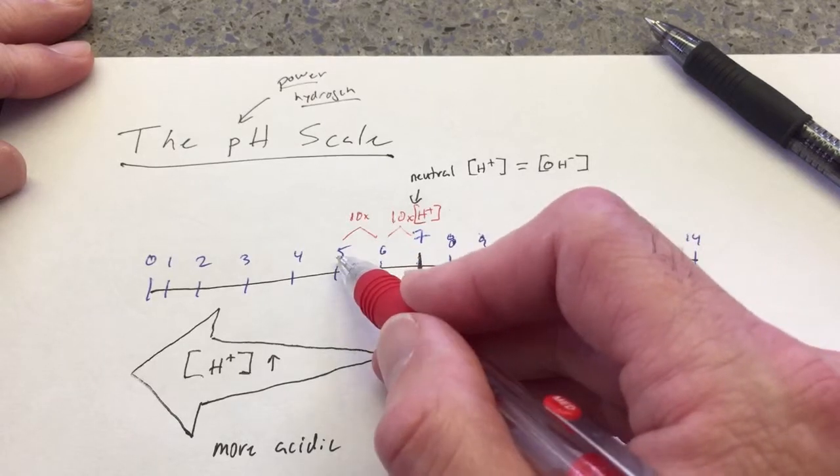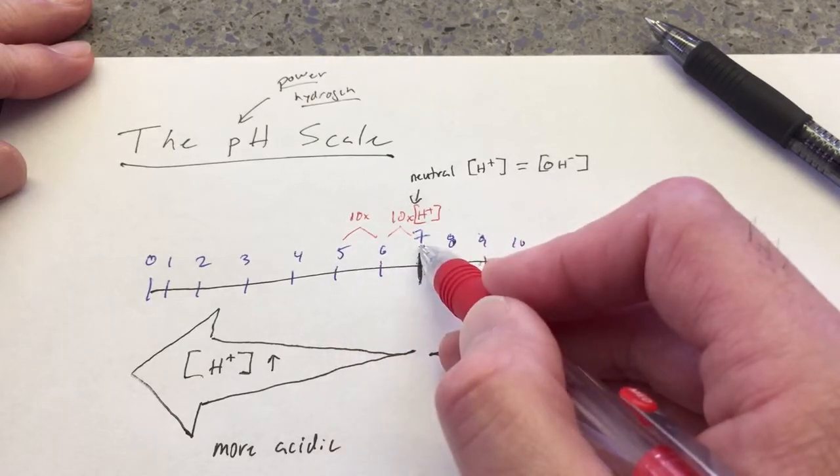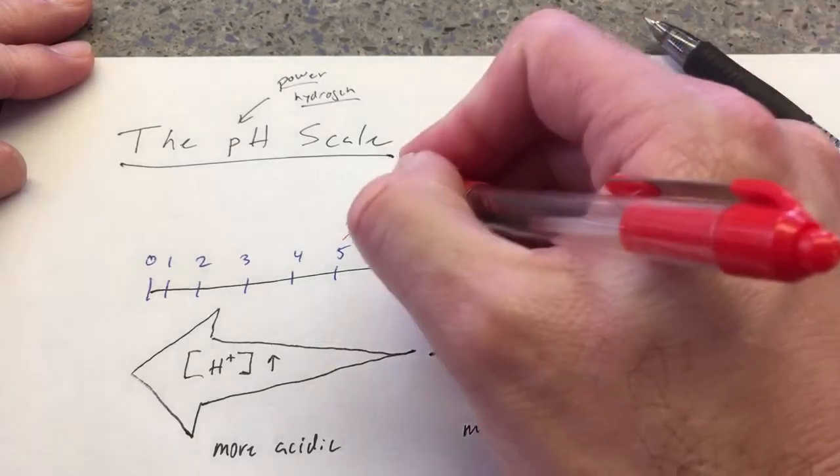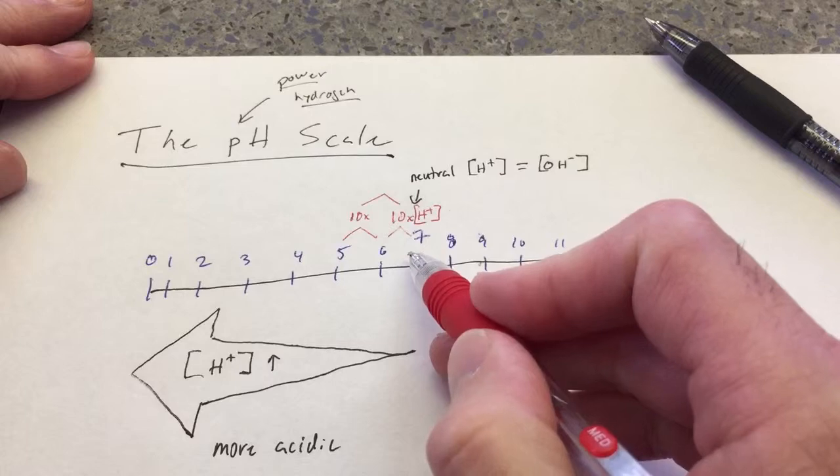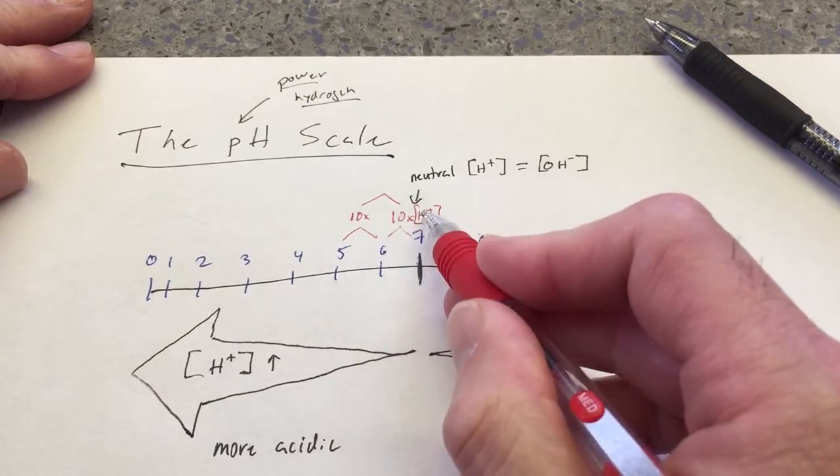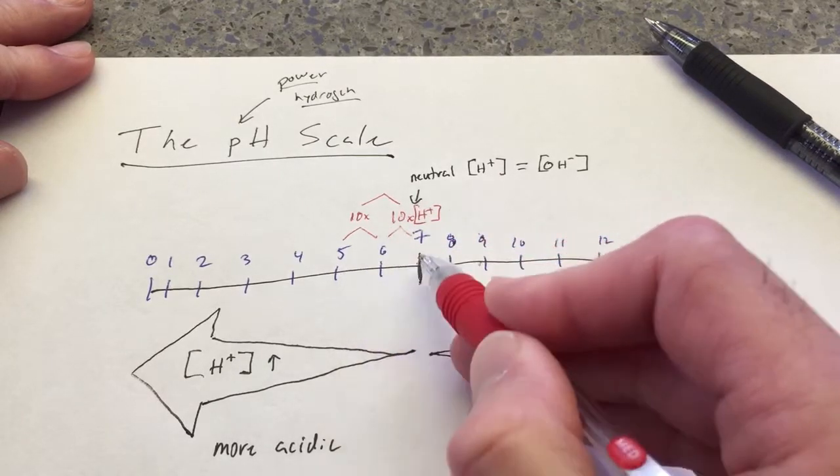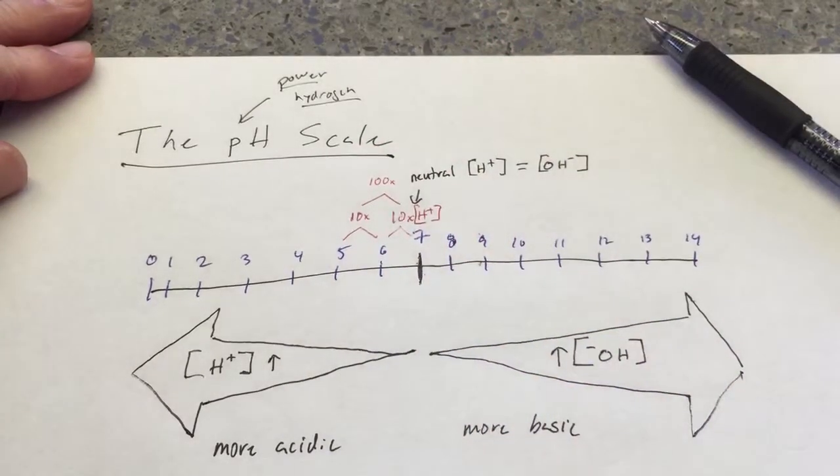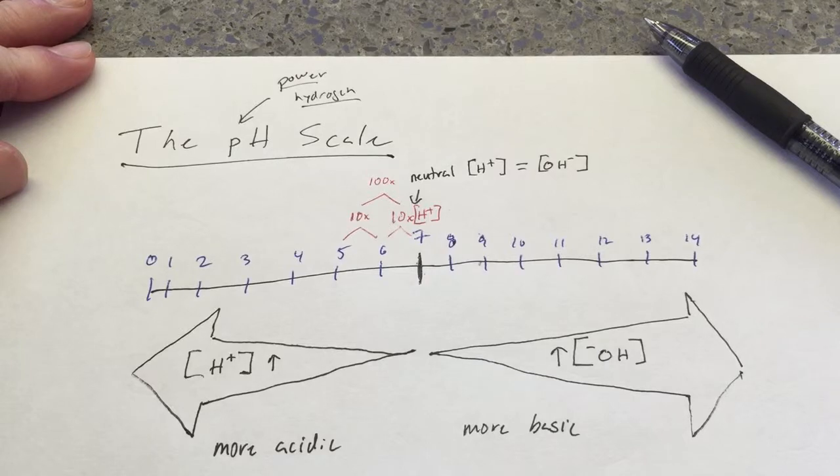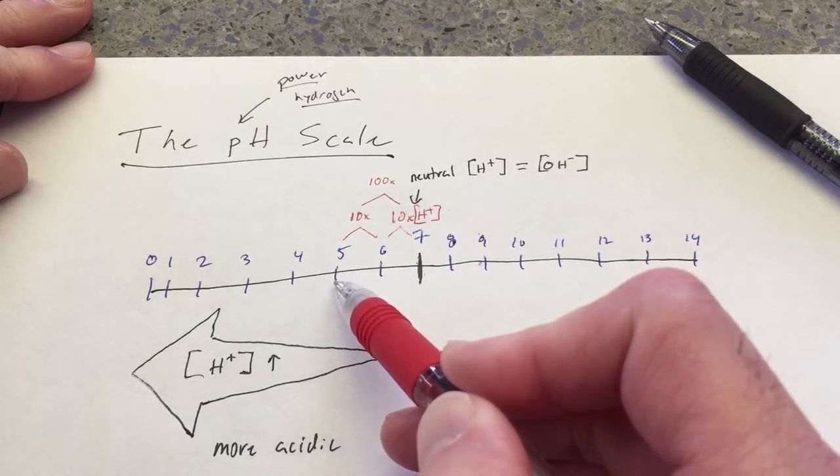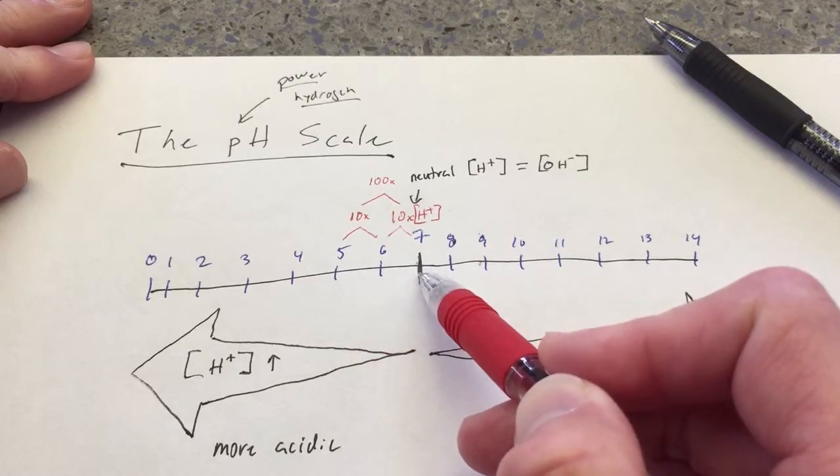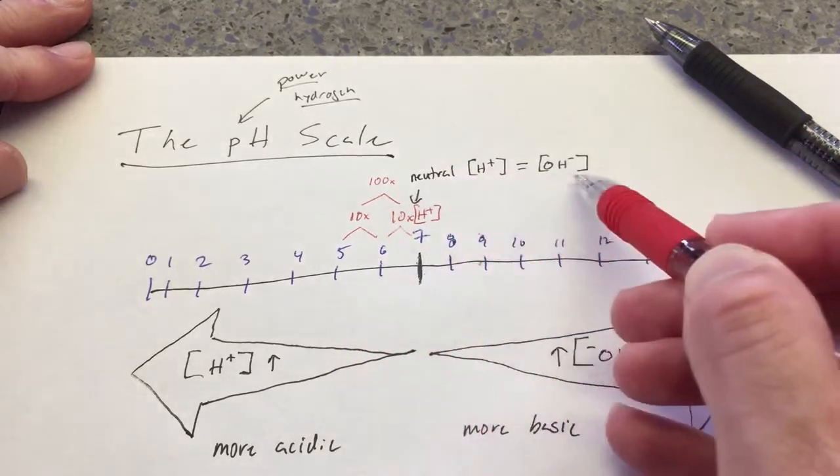So, what about the difference between pH 5 and pH 7? 20 times? No. The difference in concentration between the hydrogen ions at pH 5 than at pH 7? 100 times. So, that means that something that has a pH of 5 is 100 times more acidic than neutral solutions.